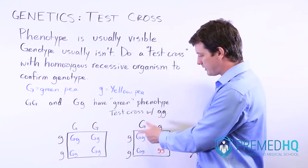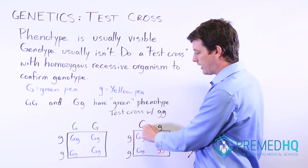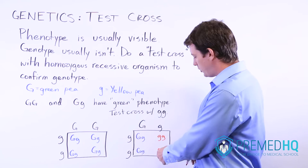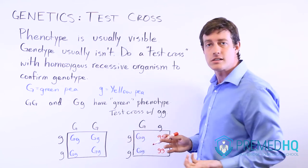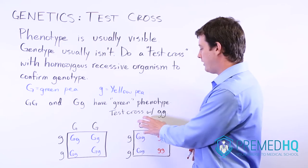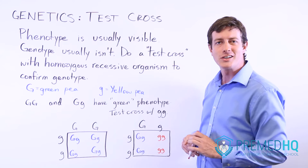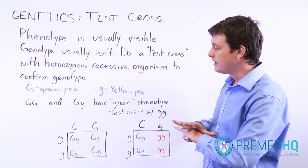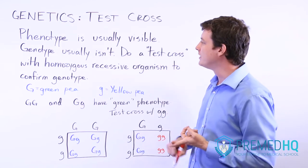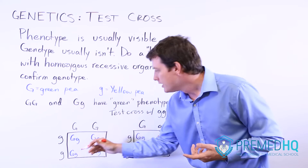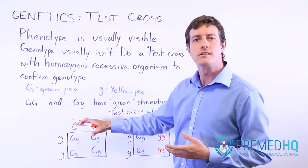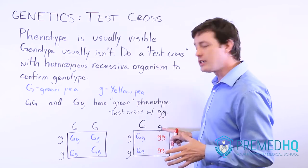In the case where the unknown parent is heterozygous, half of the offspring will get the capital G from the parent and show the dominant phenotype, while the other half will get the lowercase g from both parents and show the yellow pea recessive phenotype. So you'll see a 50/50 ratio when you do a test cross of a heterozygous parent with the homozygous recessive. If the unknown parent was homozygous dominant you get 100% dominant phenotype; if heterozygous dominant, you get a 50/50 ratio.